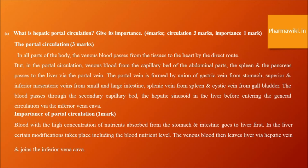Importance of portal circulation: blood with high concentration of nutrients absorbed from the stomach and intestine goes to the liver first. In the liver, certain modifications take place, including regulation of blood nutrient levels. The venous blood then leaves the liver via the hepatic vein and joins the inferior vena cava.